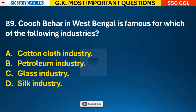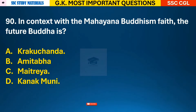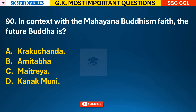Question 89: Which city in West Bengal is famous for which of the following industries? Answer D - it is famous for silk industry. Question 90: In context with the Mahayana Buddhism faith, the future Buddha is? Answer C - Maitreya.